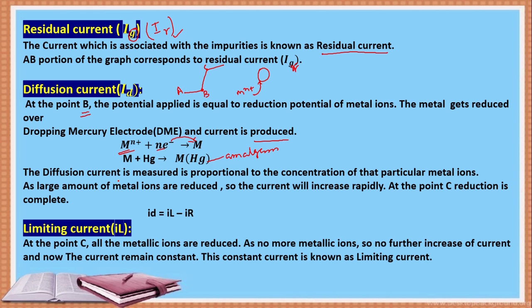The diffusion current id is proportional to the concentration of that particular metal ion. As a large number of metal ions are reduced, the current increases rapidly up to point C. At point C, all the metal ions are reduced at the dropping mercury electrode. The diffusion current value equals: limiting current minus residual current (id = il - ir).